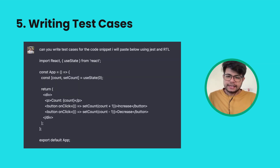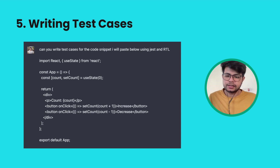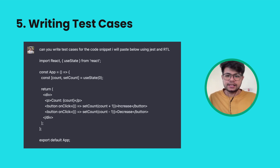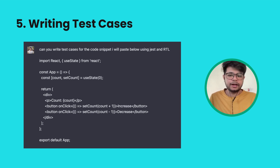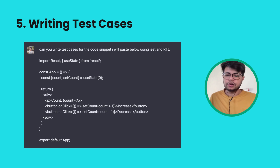Another way to leverage ChatGPT is by telling it to write test cases for you. It's quite complex but ChatGPT gives you possible recommendations for test cases, and you can use chain of thoughts to keep asking for whatever test cases you need. As you can see on screen, I told ChatGPT to write test cases for a code snippet using Jest or RTL — React Testing Library. It was a simple counter application with an increment and a decrement button, and ChatGPT went ahead and generated a possible solution for those test cases.